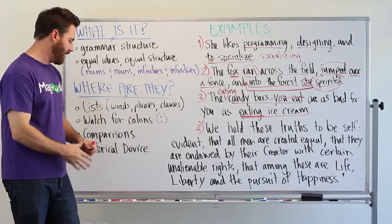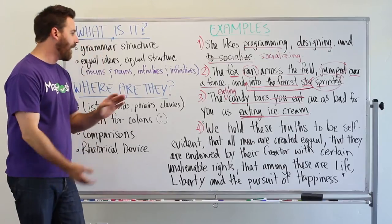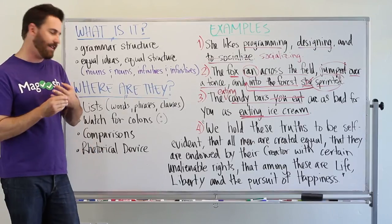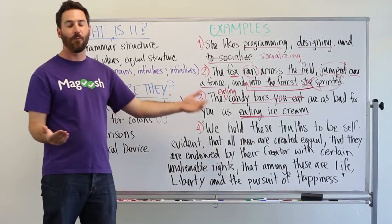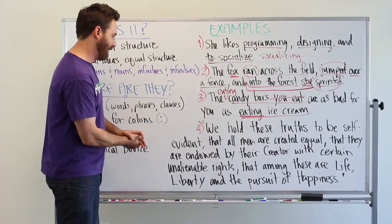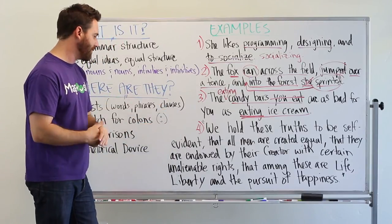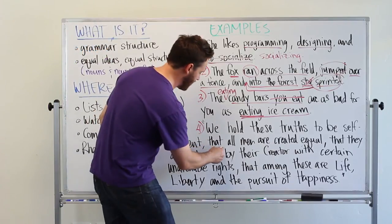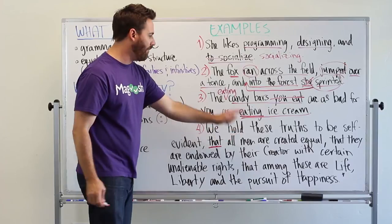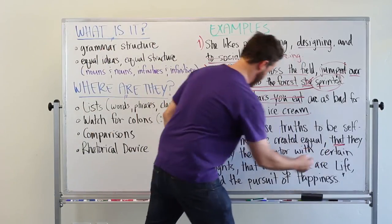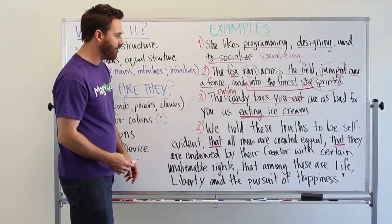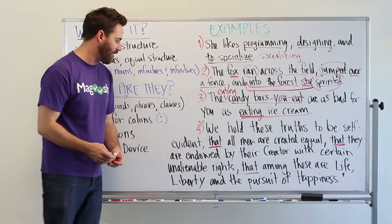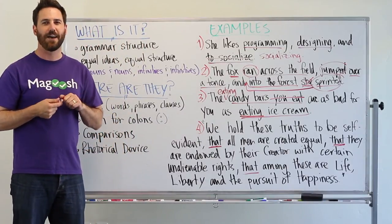The last example I have is there's nothing wrong with it. This is a good example of clauses in a list. And also the use of rhetorical device. Some of you may recognize this sentence. It's fairly famous. So we hold these truths to be self-evident. And here, this is where we get the beginning of our parallel structure. That all men are created equal. That they are endowed by their creator with certain unalienable rights. That among these are life, liberty, and the pursuit of happiness.